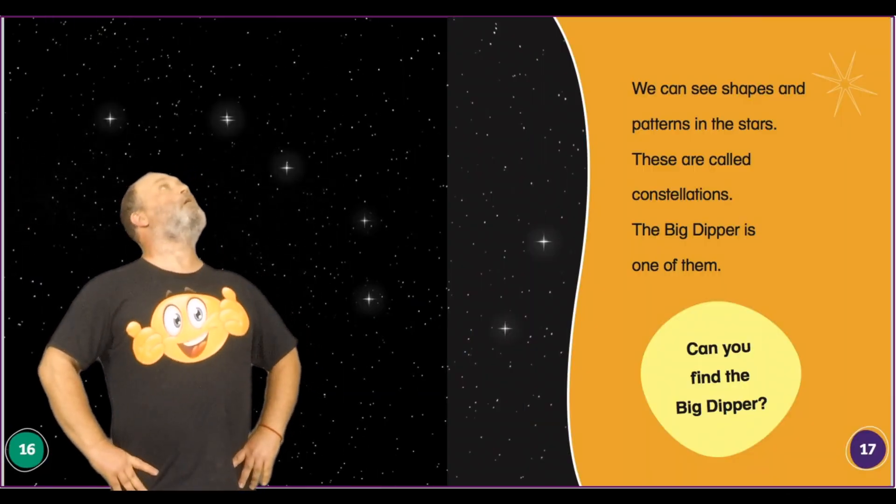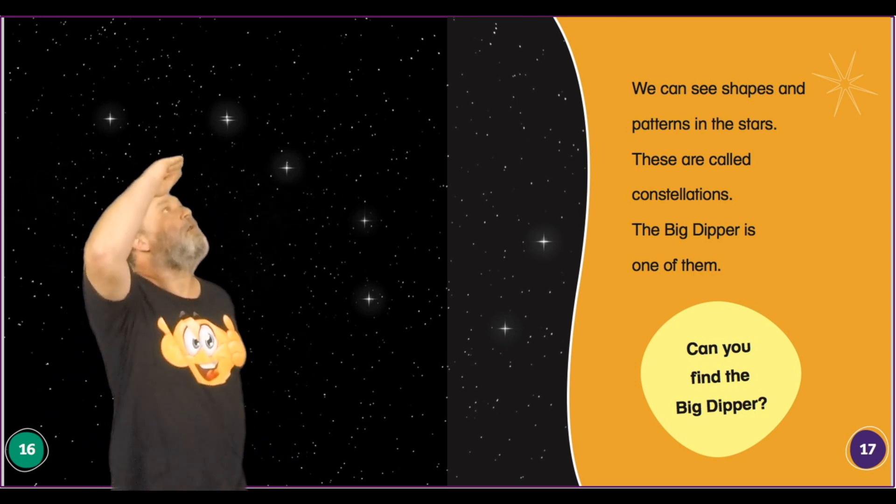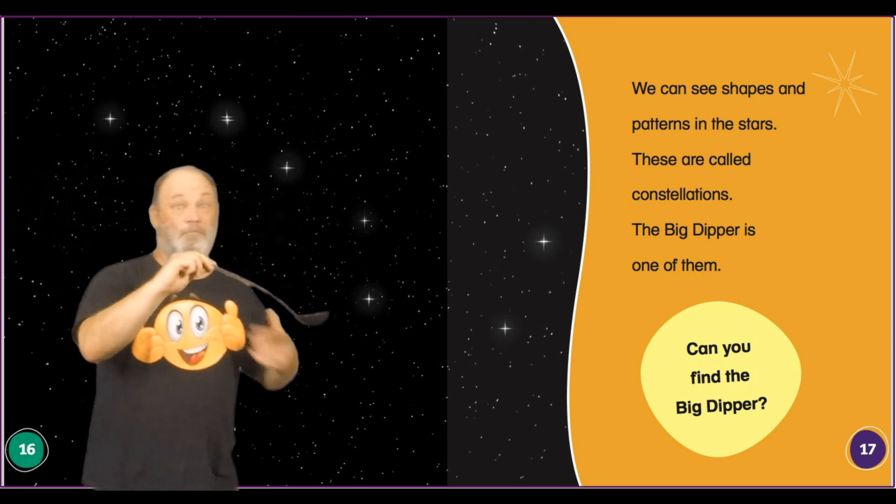We can see shapes and patterns in the stars. These are called constellations. The Big Dipper is one of them. Can you find the Big Dipper?